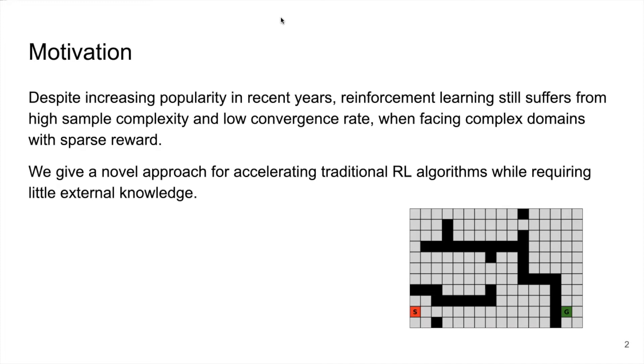For example, in this grid world navigation problem, an agent is supposed to start from S and reach the goal marked as G. The reward is sparse since the only positive reward is given by reaching the goal, and that just slows down the learning process. In this work, we give a novel approach for accelerating traditional reinforcement learning algorithms while requiring little external knowledge.